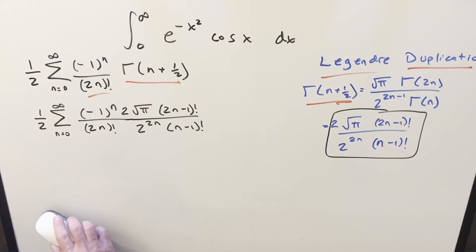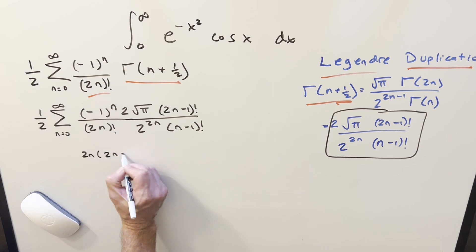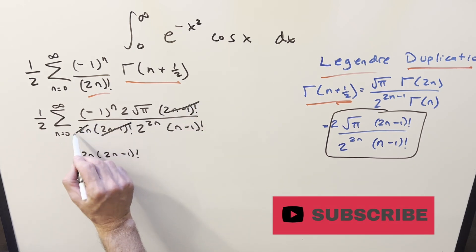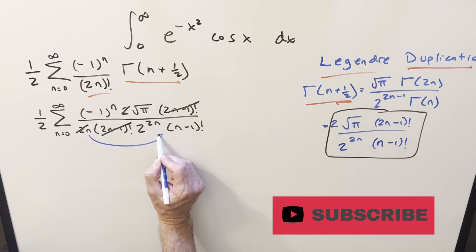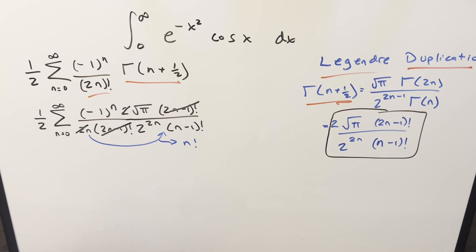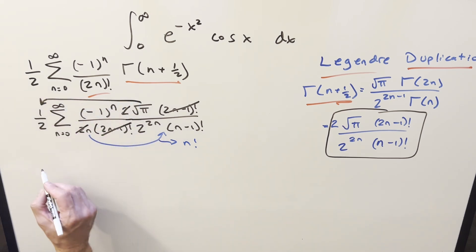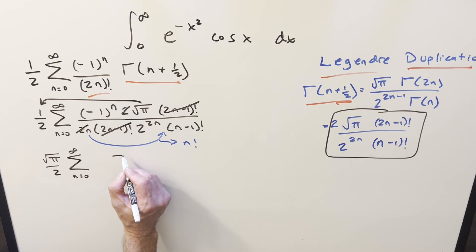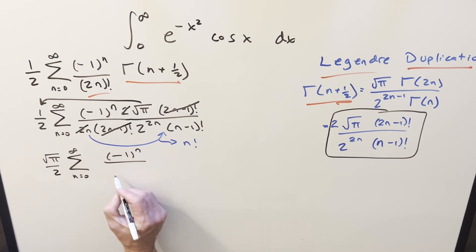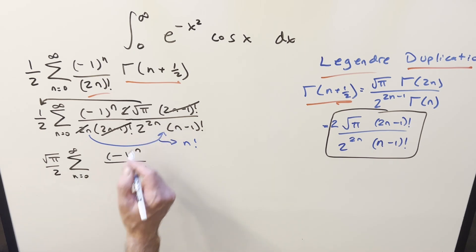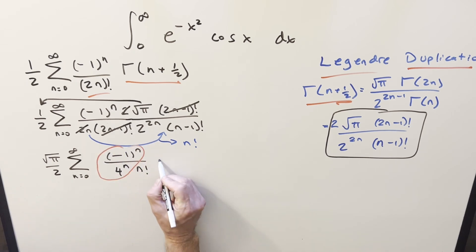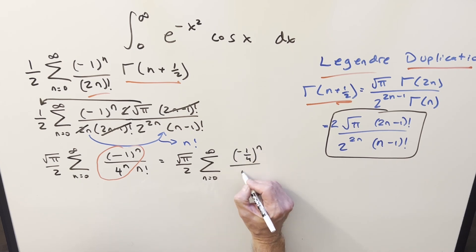Plugging this back into the series, we get more simplification. For (2n)!, we can break it up: (2n)! = 2n · (2n-1)!, so (2n-1)! cancels with (2n-1)!. Then 2 cancels with the 2 from 2^(2n-1). And n · (n-1)! becomes n!. So in the numerator we get (-1)^n, in the denominator 2^(2n) · n! — and 2^(2n) can be written as 4^n, combining with (-1)^n to give (-1/4)^n / n!.